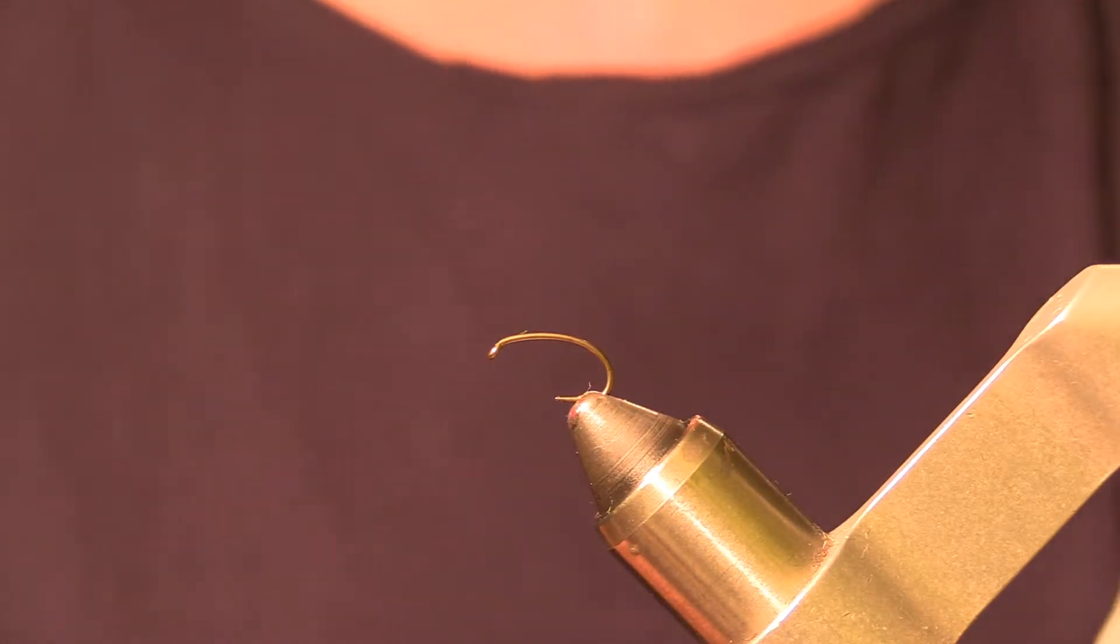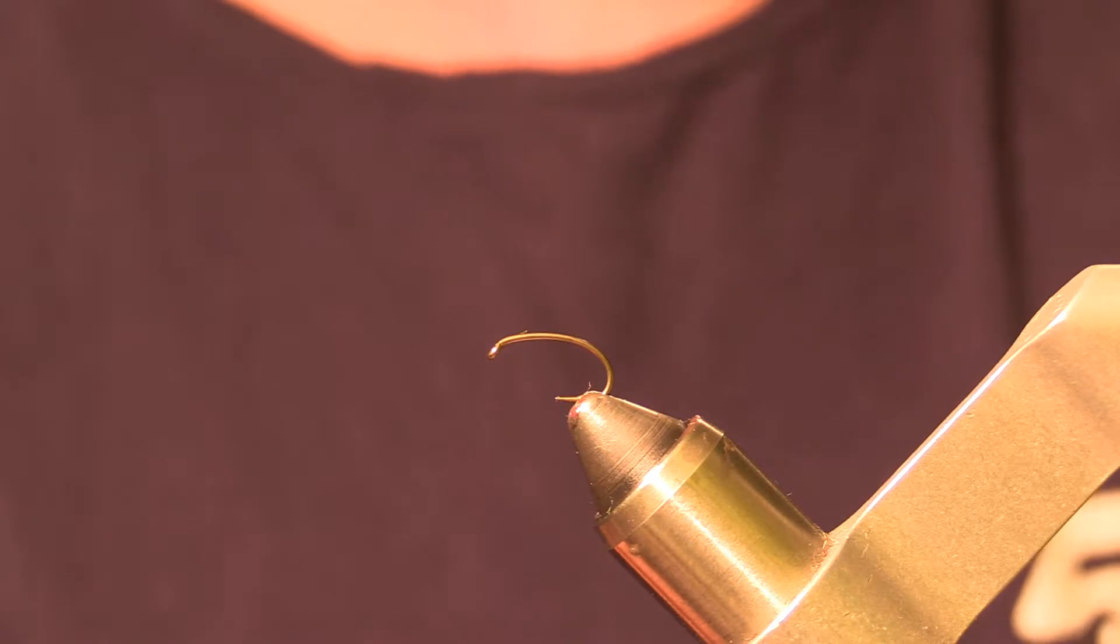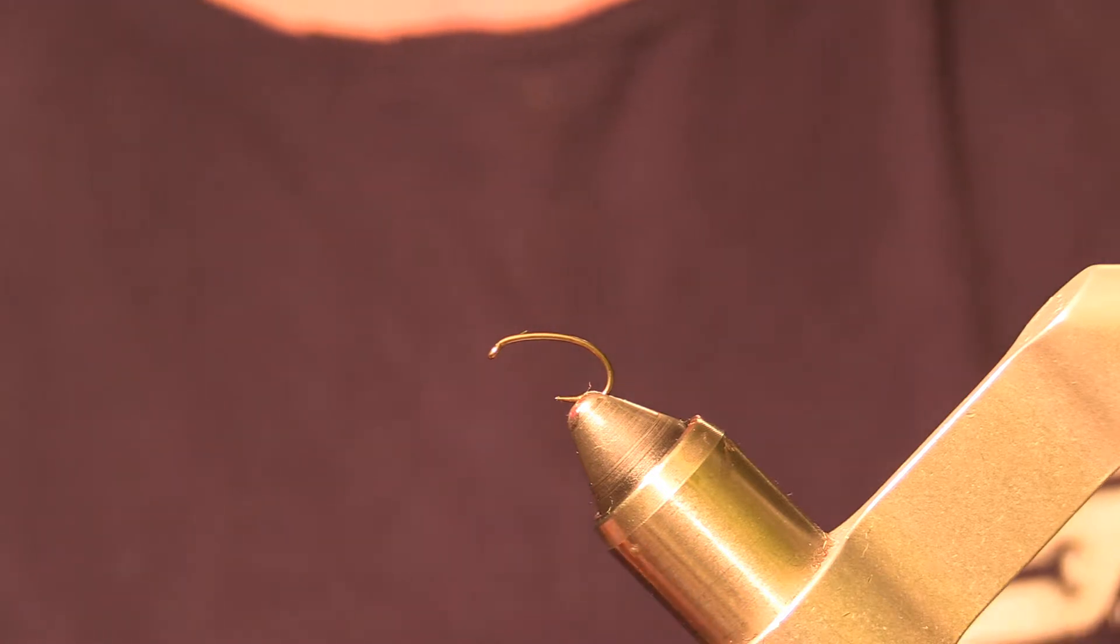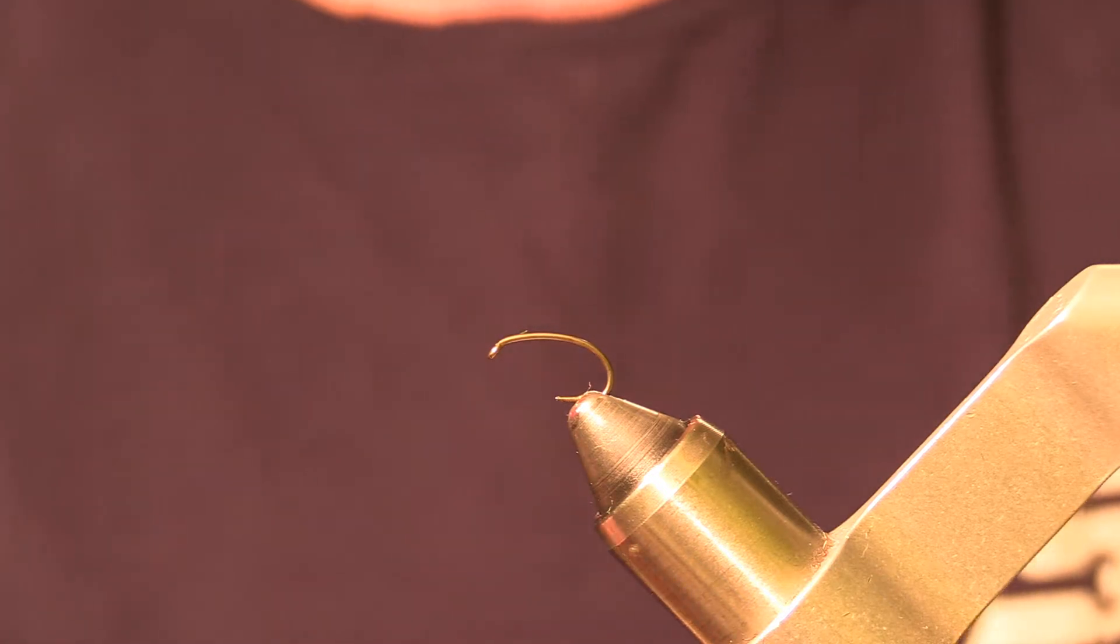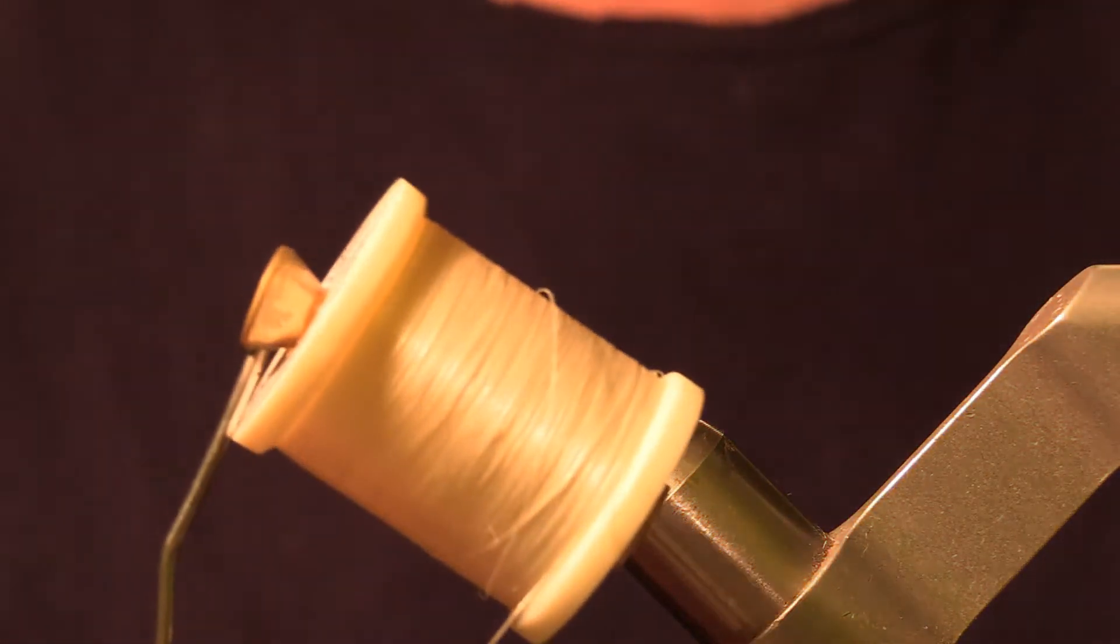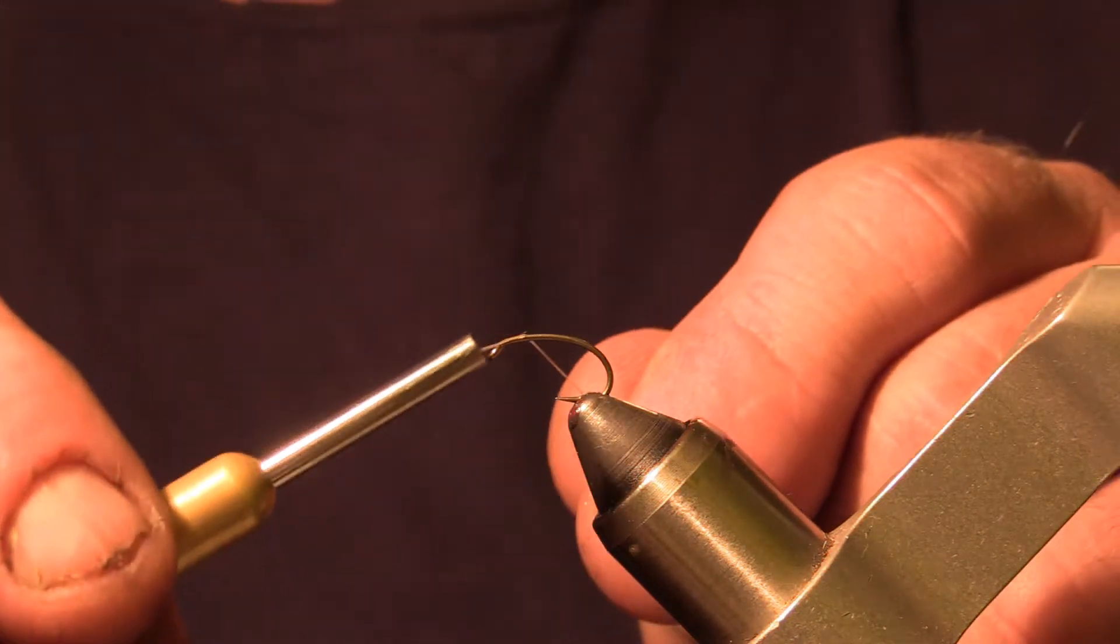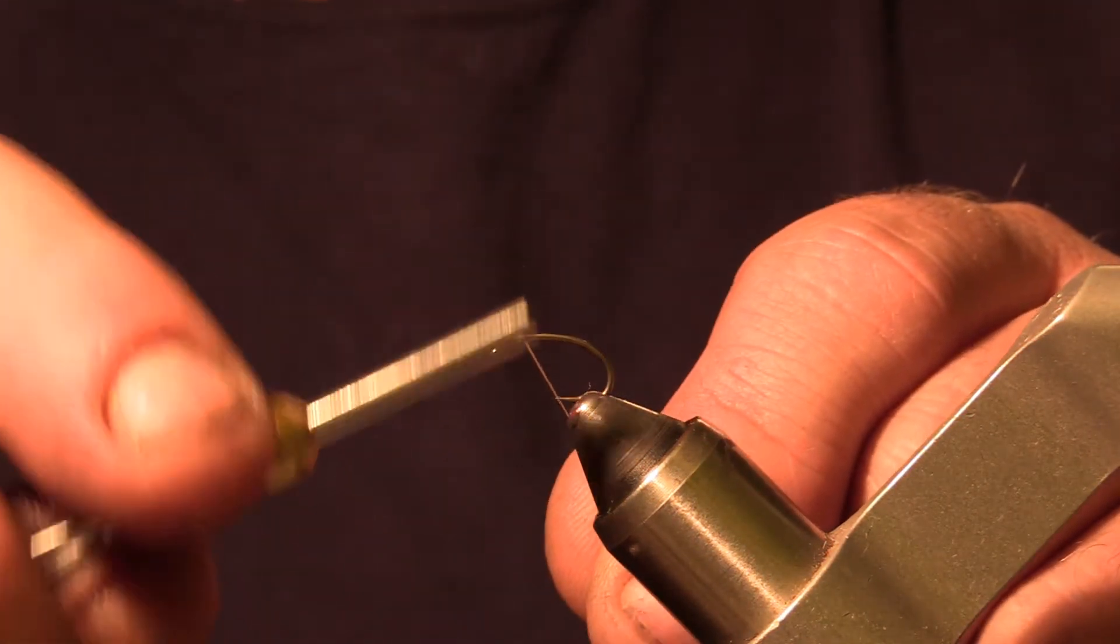The hook I have in a vise is a size 14 scud caddis type hook. The thread we're going to be using is a Danville 3-0 waxed monochord in white. So we'll start our thread just behind the hook eye.